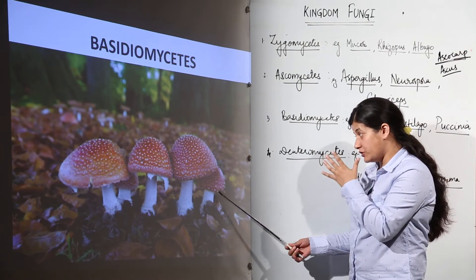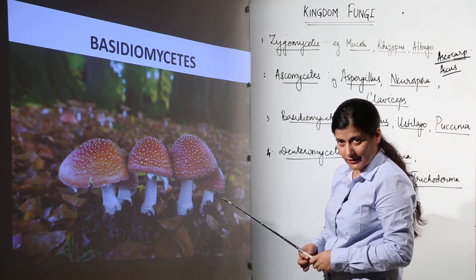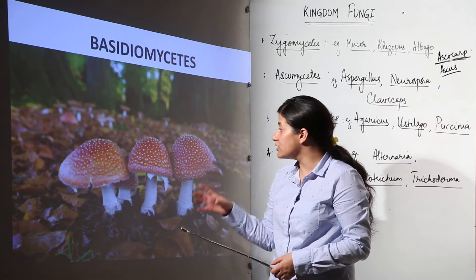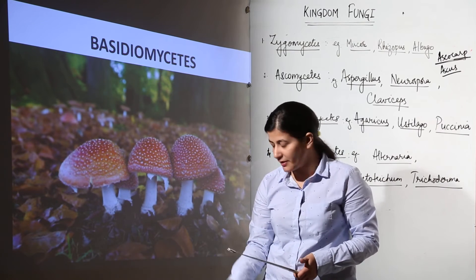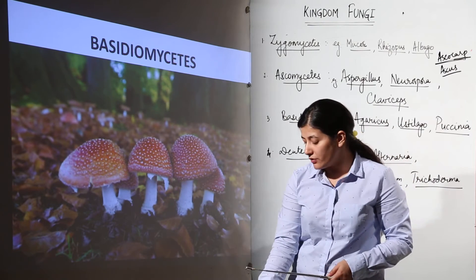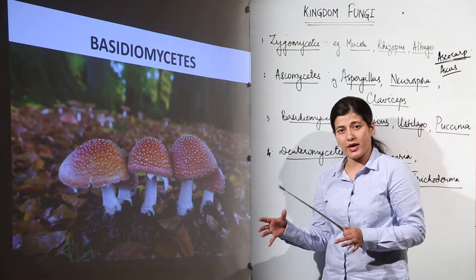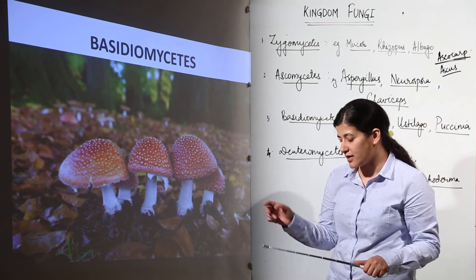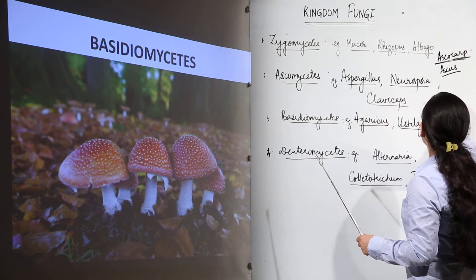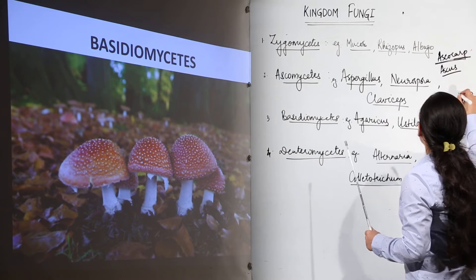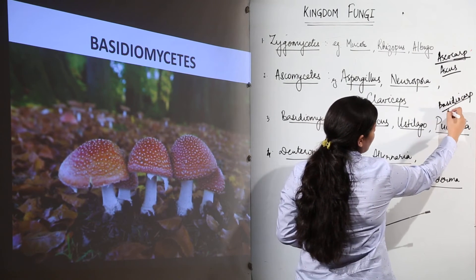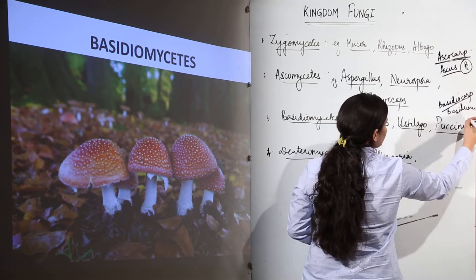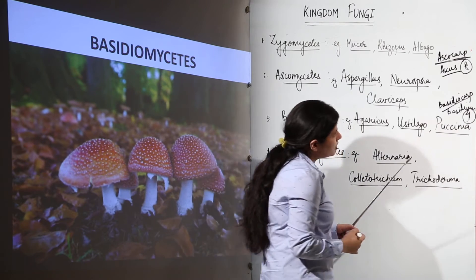Next is Basidiomycetes. These are mushrooms — the first fungi most people are introduced to. You find wild mushrooms as well as edible mushrooms on pizza, etc. They belong to class Basidiomycetes. Here also classification is based on the fruiting body. The fruiting body is called basidiocarp — just as we had asco cup, here we have basidiocarp. Where ascus had spores in Ascomycetes, here we have basidium where spores are formed.